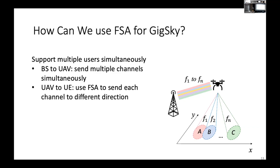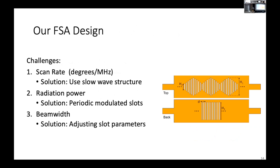We cannot directly use existing FSA solutions; there are a number of design challenges. First, existing FSA solutions consume a huge amount of bandwidth when scanning a certain angle, and we needed a big enough scan angle within the available 5G spectrum bandwidth — solved by using a slow wave structure. However, the slow wave structure has very low radiation power, so we used periodic modulated slots, visible in the figure on the right. The third challenge was adjusting the beam shape to cover a large enough user area, solved by adjusting the length, width, and number of slots on the antenna structure.